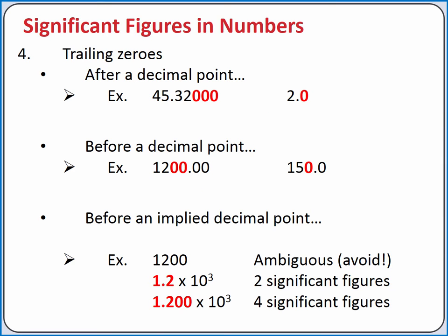Trailing zeros are to the right of the last non-zero digit. There are three possibilities for trailing zeros. If a trailing zero occurs after a decimal point, it is significant.